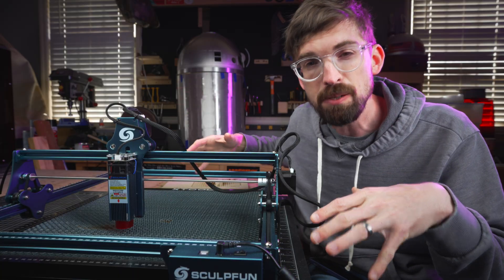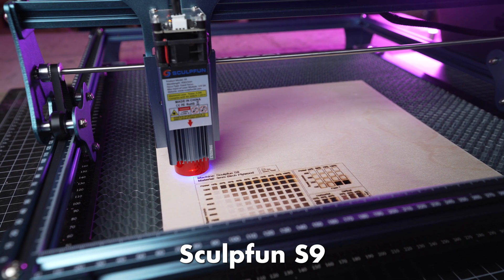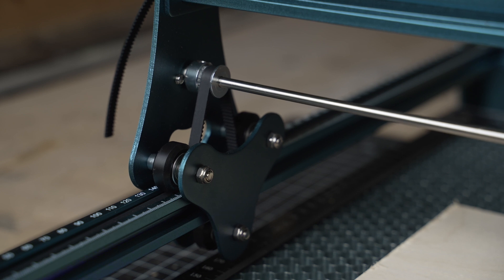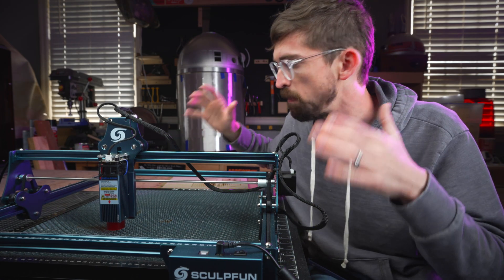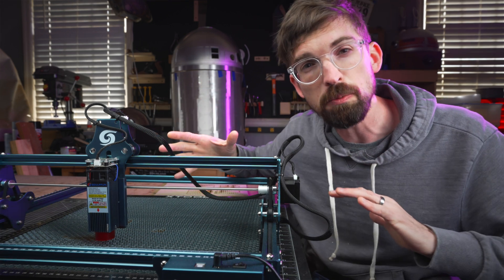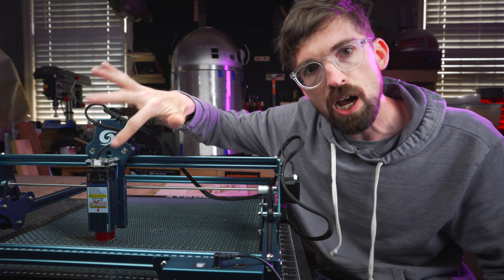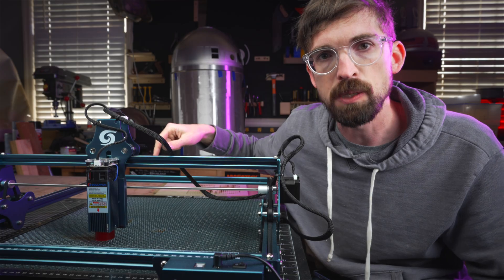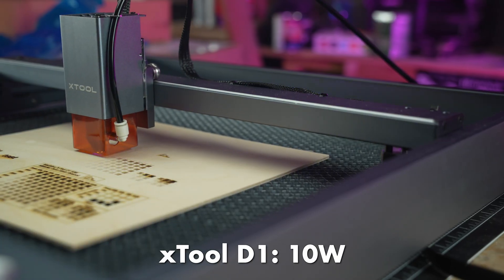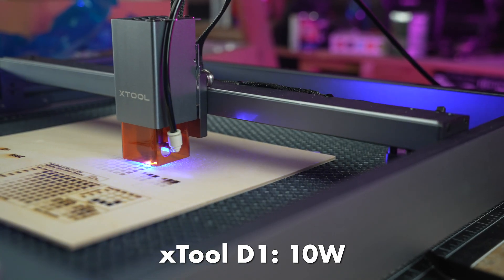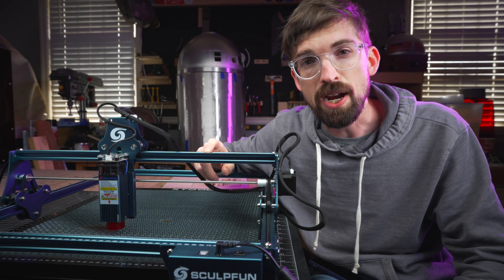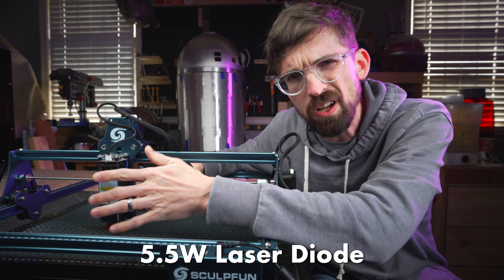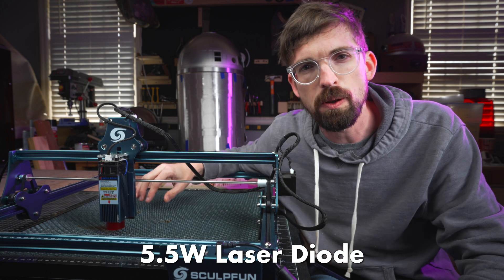Then we get into machines like this. These are full-frame gantry-style machines that run on belts and wheels with stepper motors. These are nice because they give you a really big work area. Usually these machines come in a 5-watt or 10-watt option. The SculptFun S9 sits right in the middle. This is a 4 to 5.5-watt laser diode module.